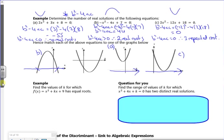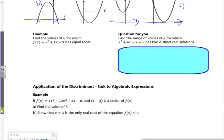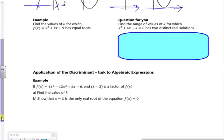I'm on five minutes, I'm going to keep going. I'll do this example, then there's a question for you as well. So it says find the values for k for which it's got equal roots. So I know equal roots is repeated roots, is b² - 4ac equals zero.